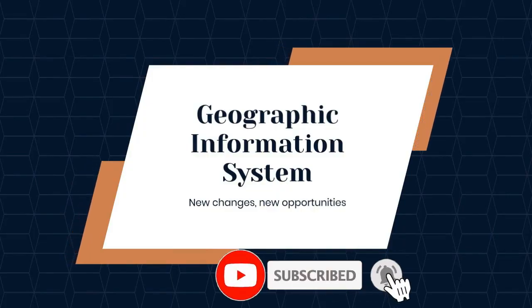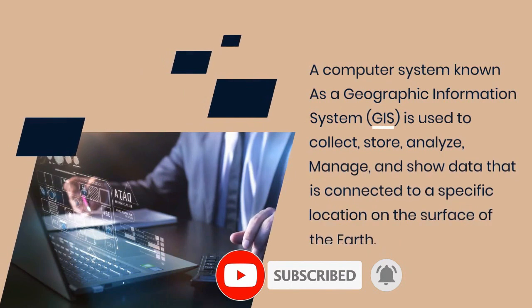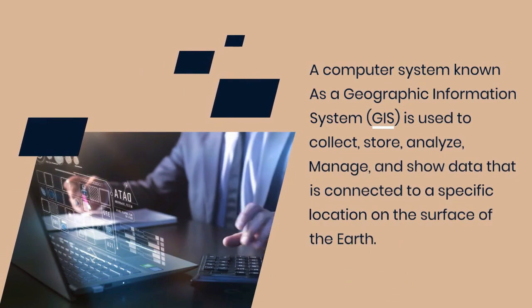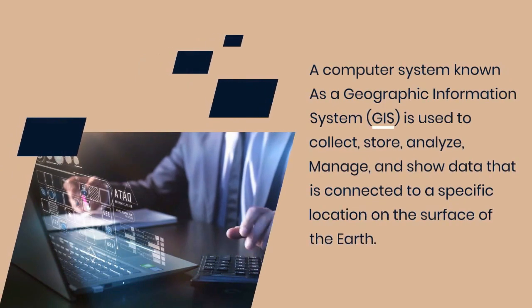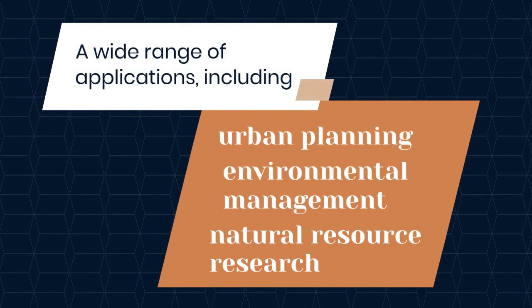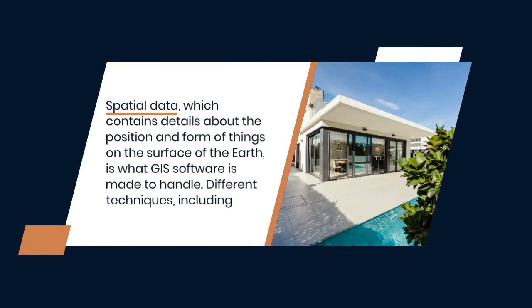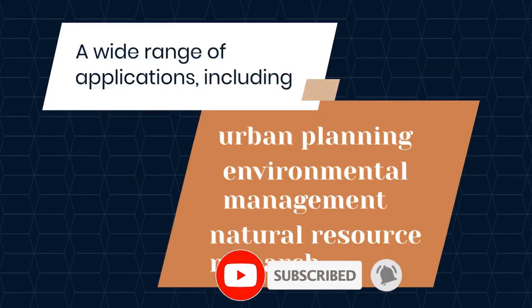A computer system known as a Geographic Information System, GIS, is used to collect, store, analyze, manage, and show data that is connected to a specific location on the surface of the earth. A wide range of applications, including urban planning, environmental management, natural resource research, and more use spatial data, which contains details about the position and form of things on the surface of the earth. GIS software is made to handle this spatial data.